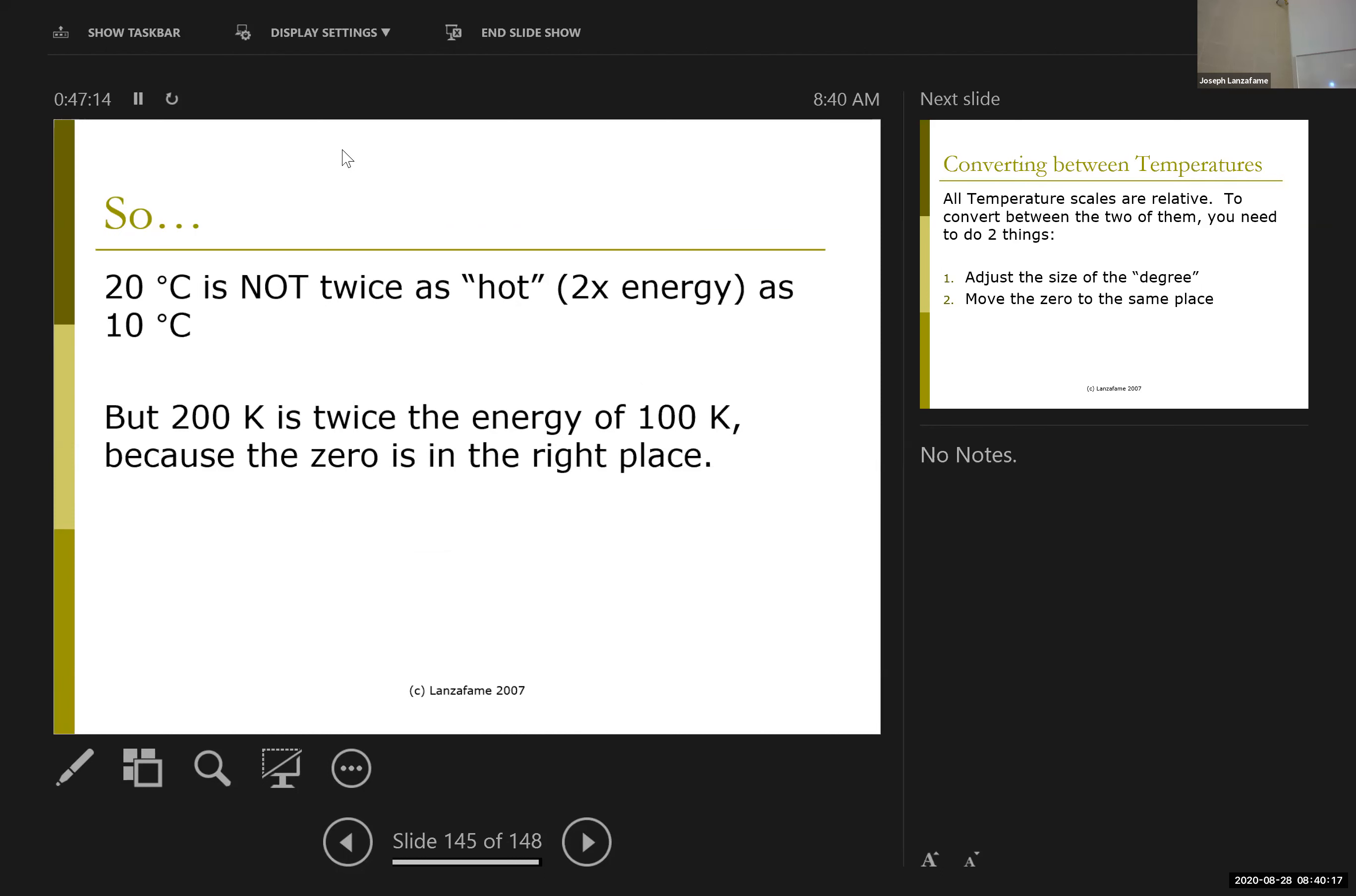Because 20 to 10 is half. On the other hand, 20 degrees Celsius is like 70 degrees and 10 degrees is like 50 degrees Fahrenheit. But in Kelvins, 20 degrees Celsius is 293 and 10 is 283. There's hardly any difference in Kelvins, which really represents the absolute amount of energy.